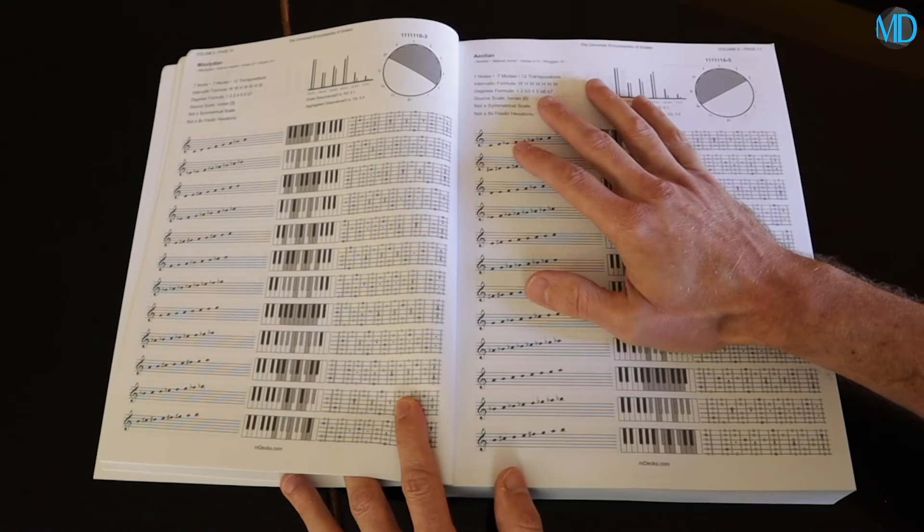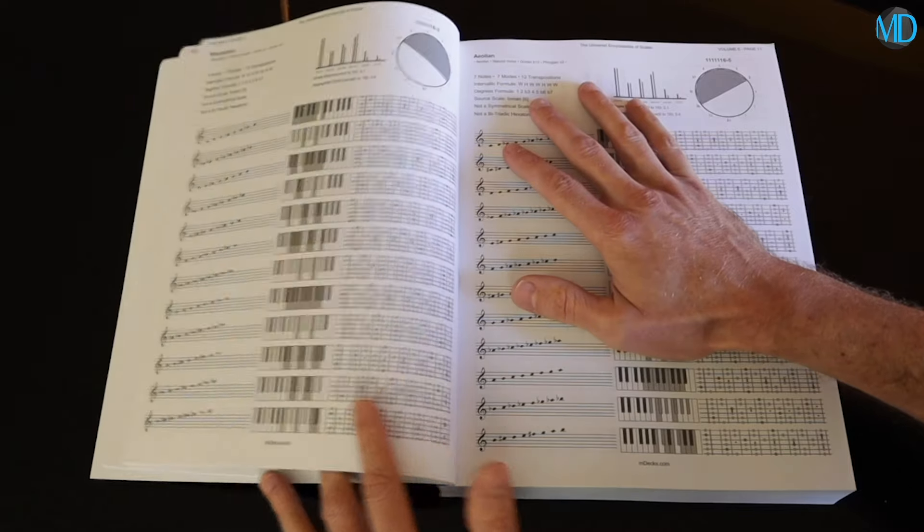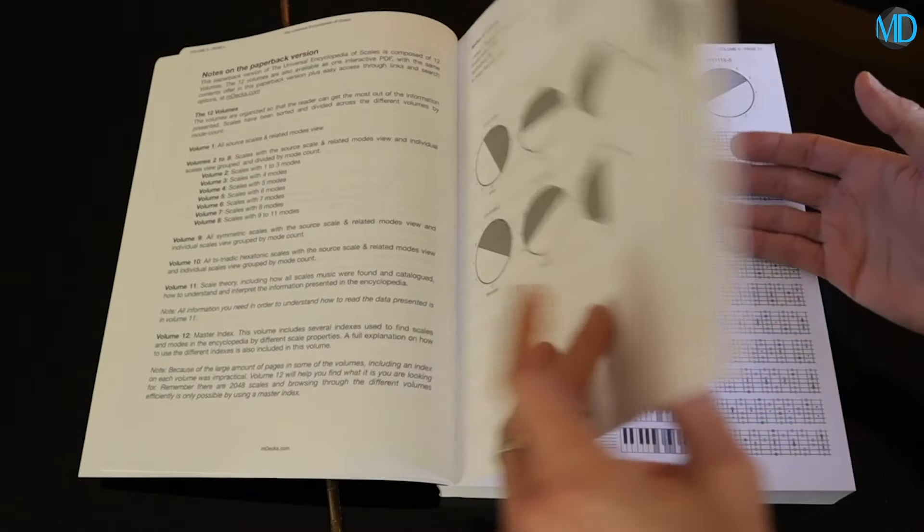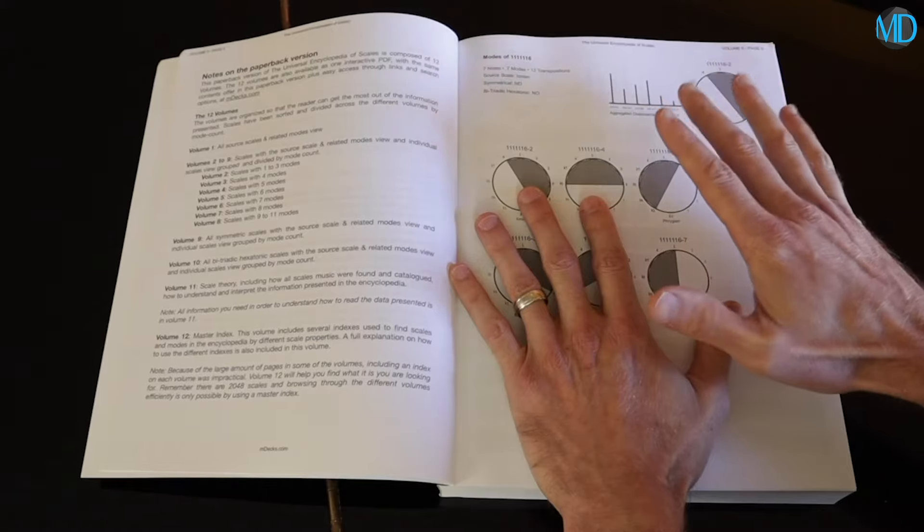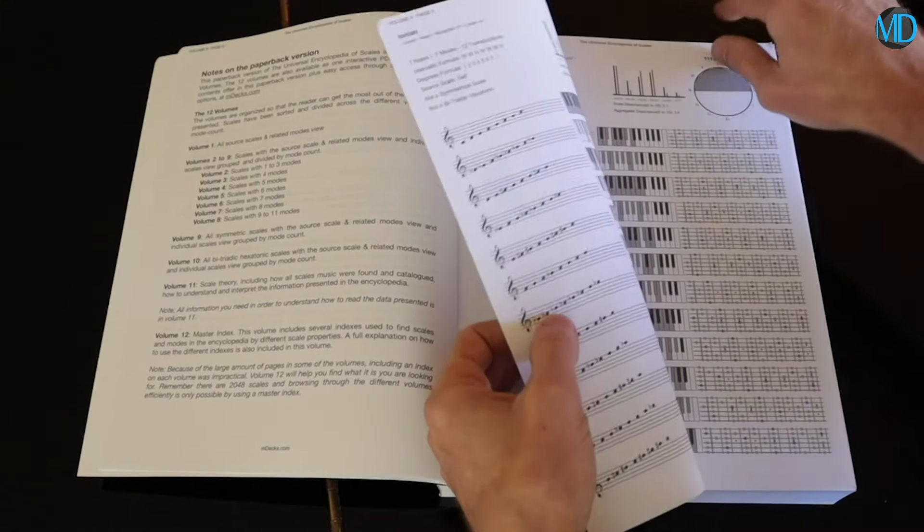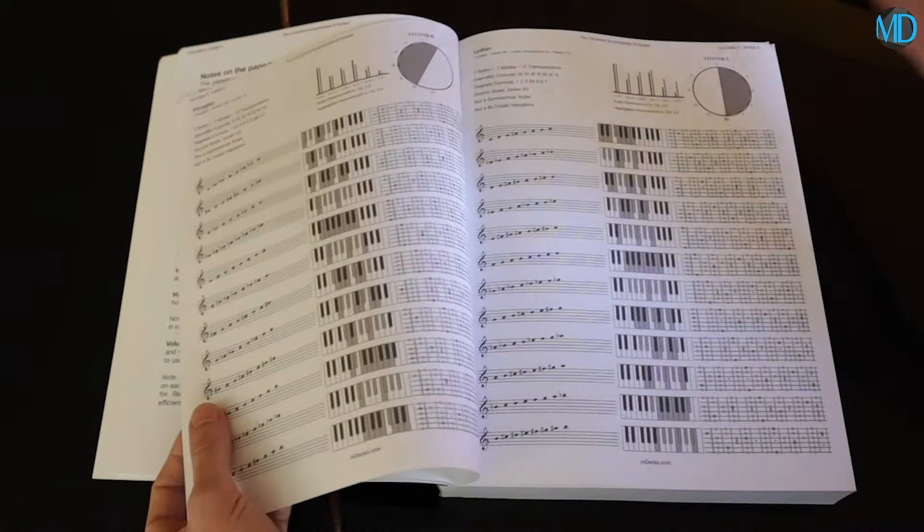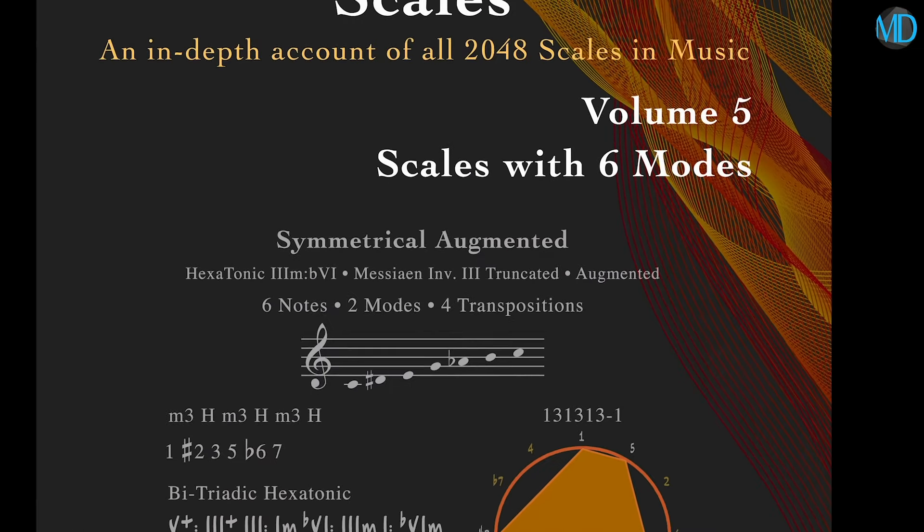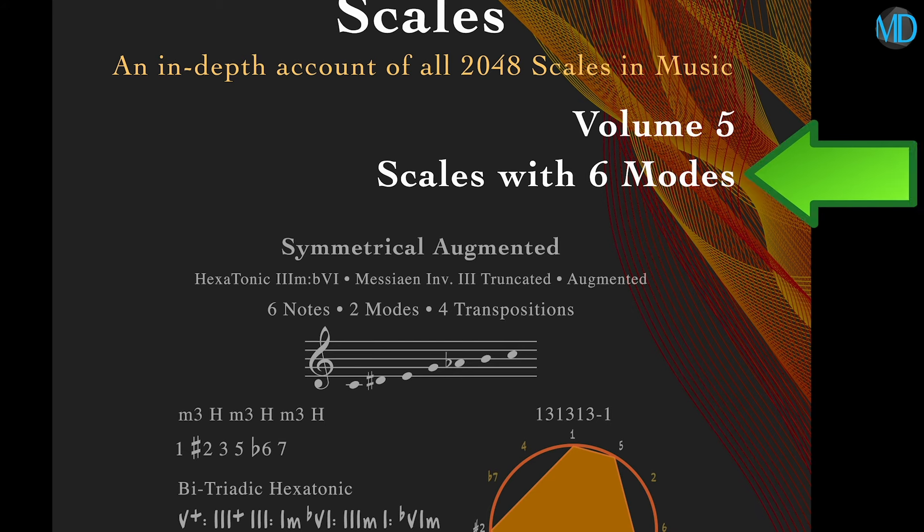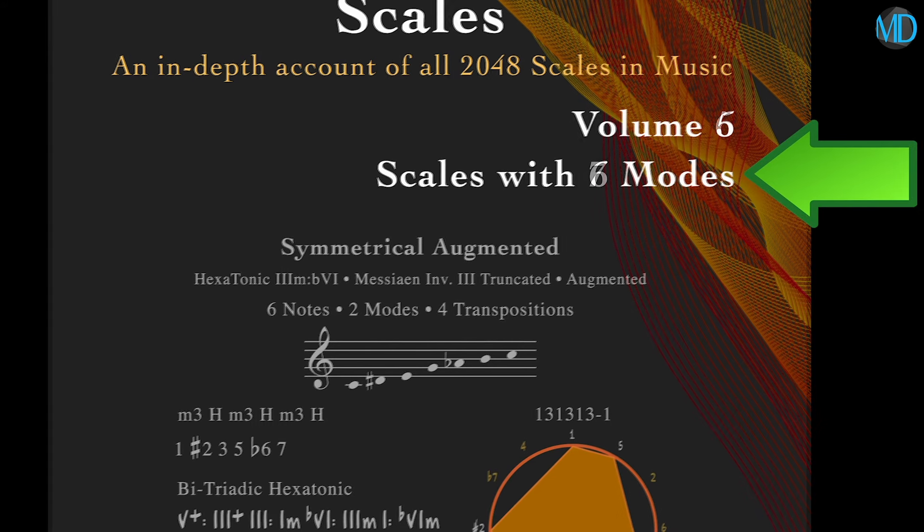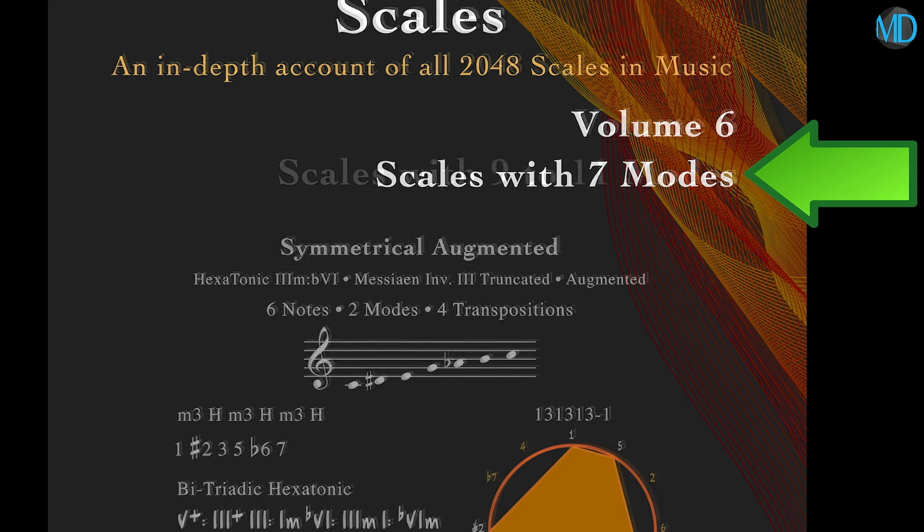Right. So here I found the Aeolian scale. If I go back, I'll find the Ionian and the related modes. And then the next seven pages will be all the modes from Ionian. That's pretty cool. And you have every single scale in music, all 2048, organized this way? Yep. And the scales in these core volumes are grouped by mode count, so you know how many pages of scales to expect after each source and related modes page. That keeps it really easy when browsing through each volume. It sure does.